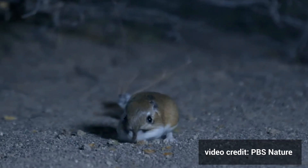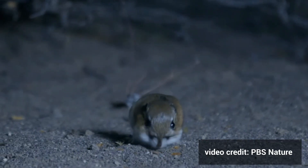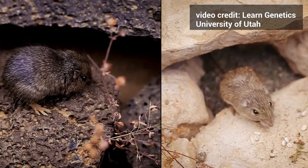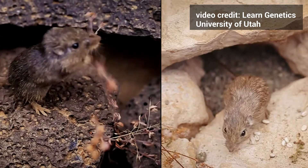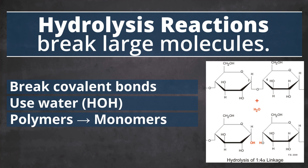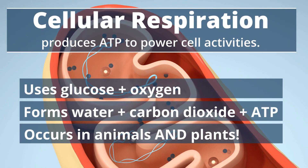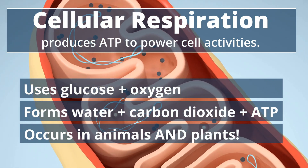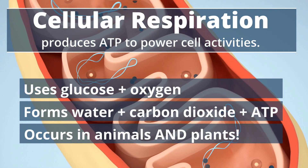Complex carbohydrates are important for long-term energy storage. Kangaroo rats and rock pocket mice are both granivores, which means their primary food source are seeds rich in carbohydrates. As they digest their food, complex carbohydrates are broken down to form glucose and other simple sugars. Glucose can be broken down during the process of cellular respiration to form ATP, the energy source that powers all of the animal's activities.